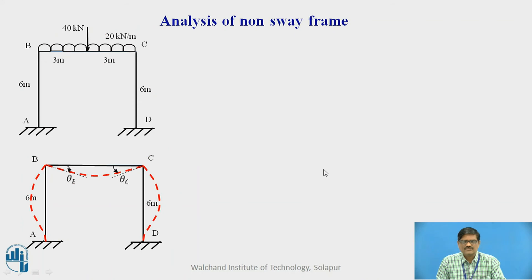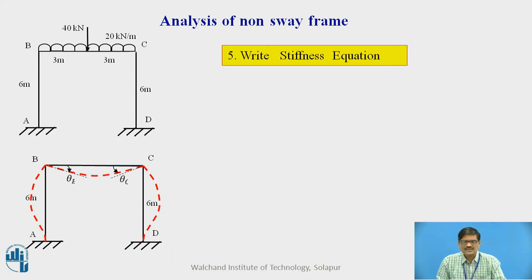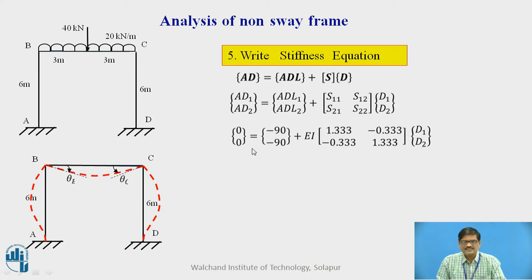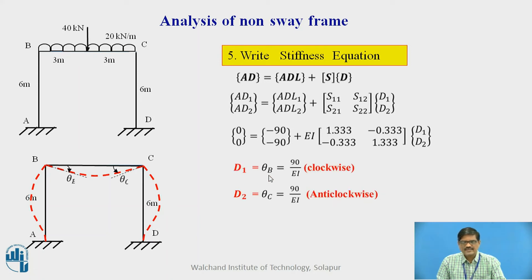With the stiffness matrix determined, we write the stiffness equation AD = ADL + S × D and substitute all values. Solving this equation, we get D1 = theta B = 90/EI and D2 = theta C = 90/EI, both positive. This confirms our assumptions: theta B is clockwise and theta C is anticlockwise.